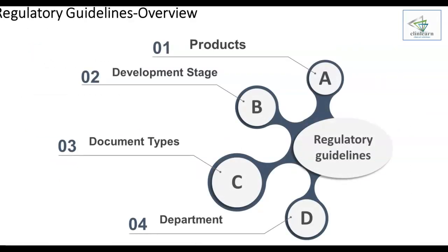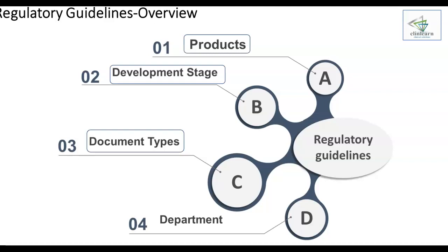Broadly, the regulatory guidelines can be categorized based on products, development stage of the medicinal product, the type of regulatory document, and the department from which the regulatory guideline originates. These categorizations are not mutually exclusive; they can be considered hierarchical and can be subsets of each other. In this video we will try to understand these guidelines with product type as the reference. As a medical writer, before embarking on a project, it is imperative that you understand the regulatory requirements for building these documents.